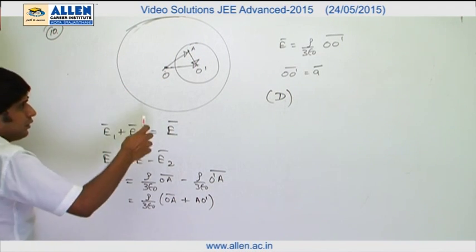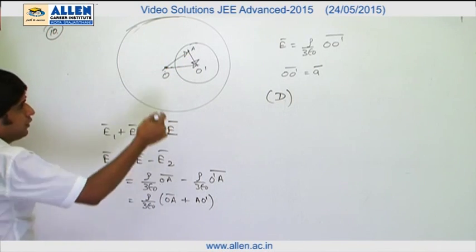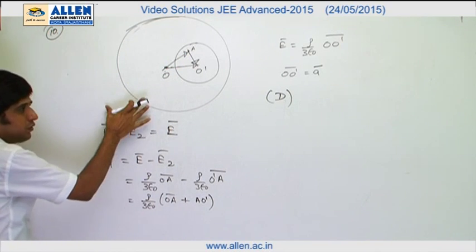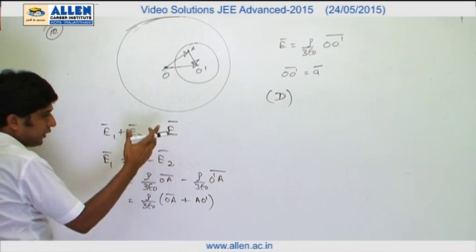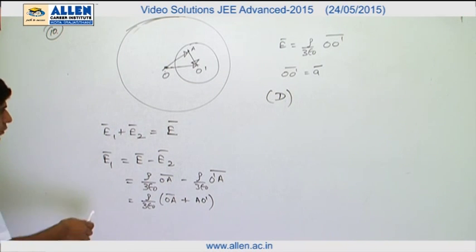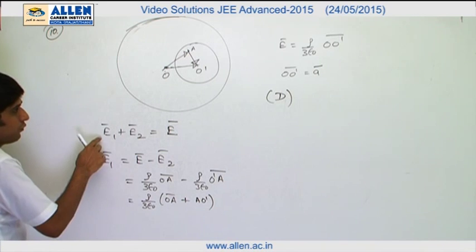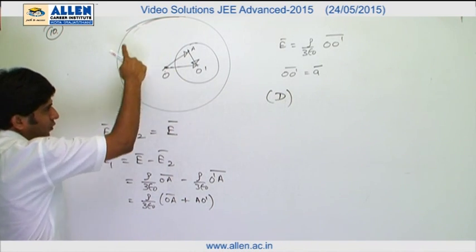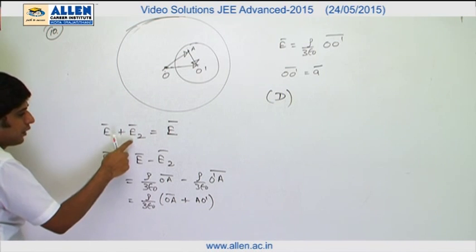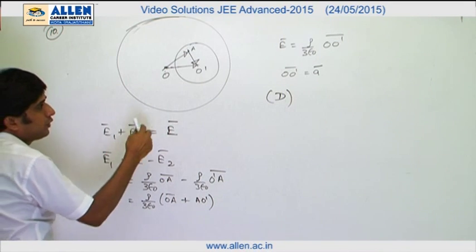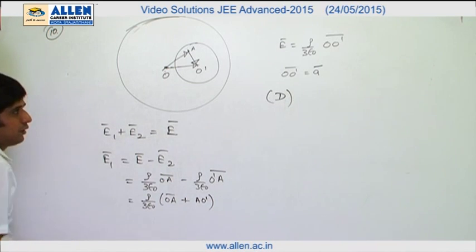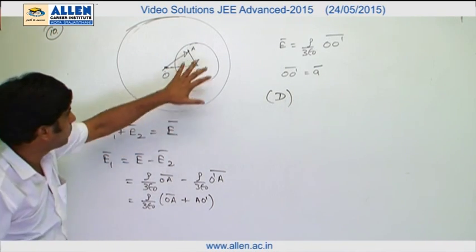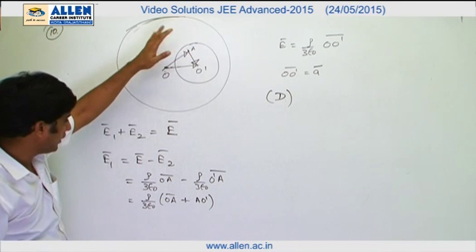To calculate field at A due to remaining part of the sphere, the equation E1 plus E2 equals to E can be used by using the principle of superposition, where E1 is the electric field due to remaining part of the sphere, E2 is the field due to the material of the cavity, and E is the net field due to the complete sphere at point A.